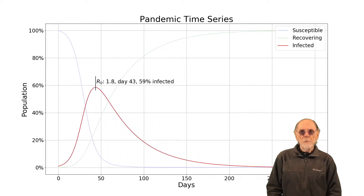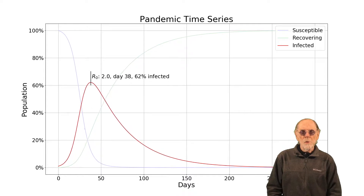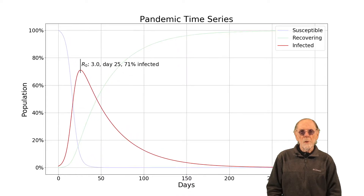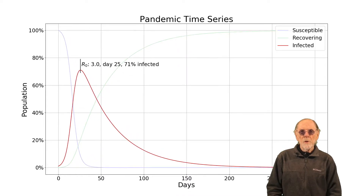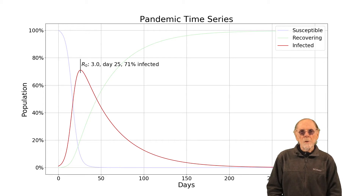The importance of the model is that it shows the relationship between R sub zero, the infection rate, and the peak number of infected individuals. Computing that peak number is very important to public policy, because in some scenarios it shows a peak infected population that far exceeds our healthcare system's ability to treat them.